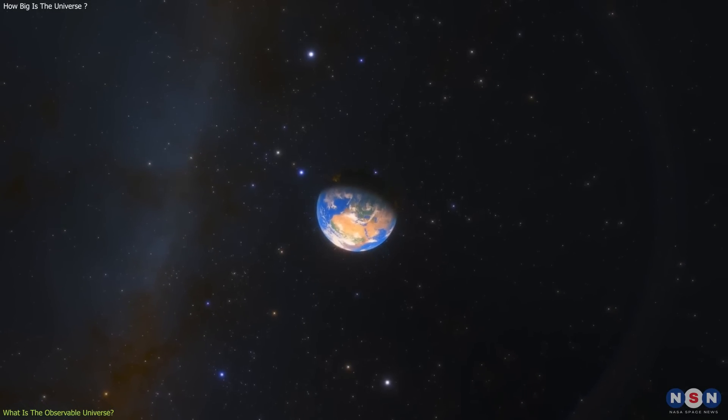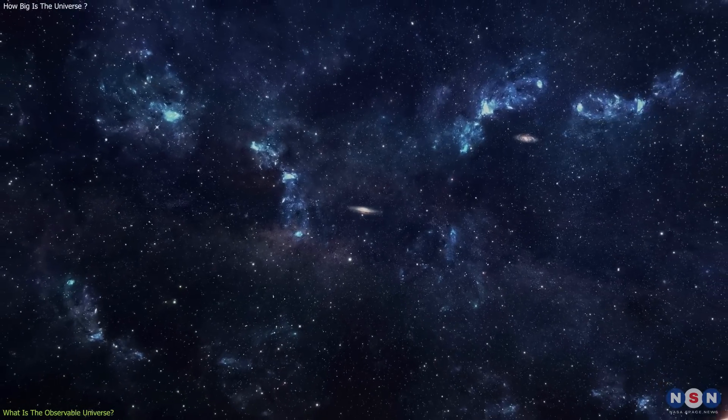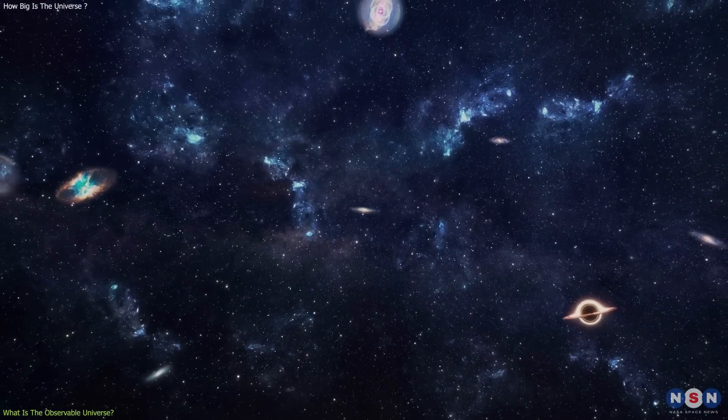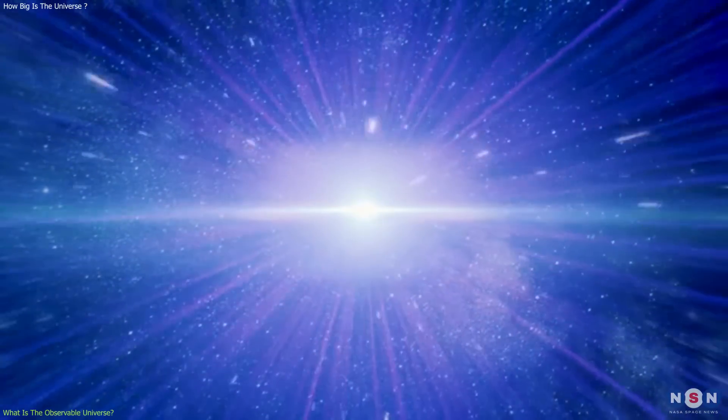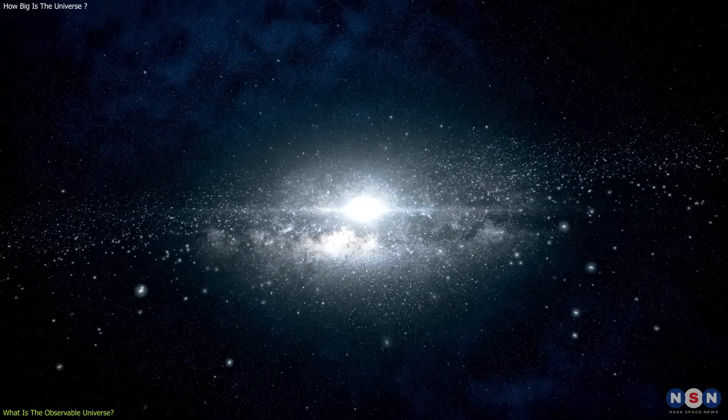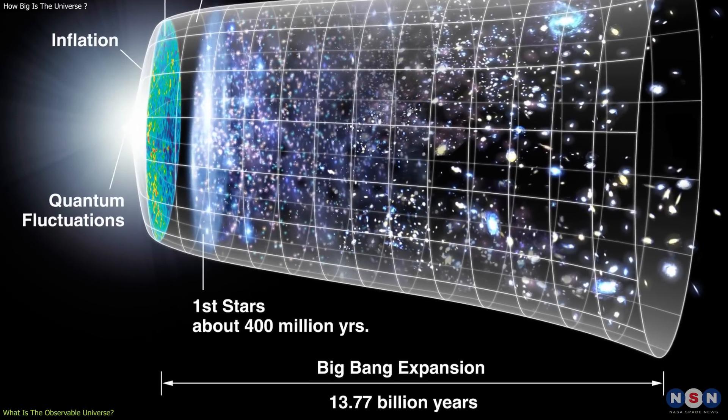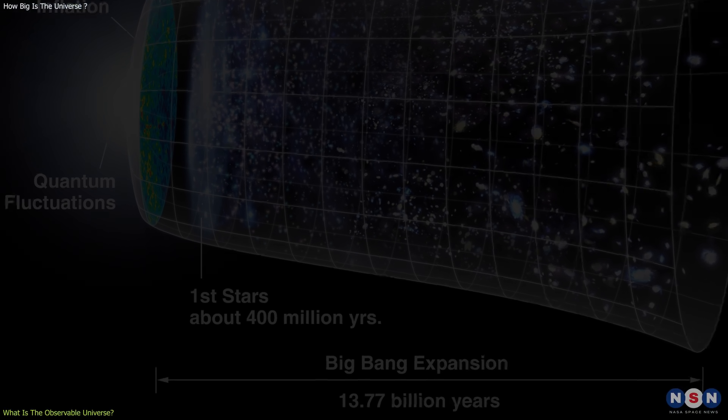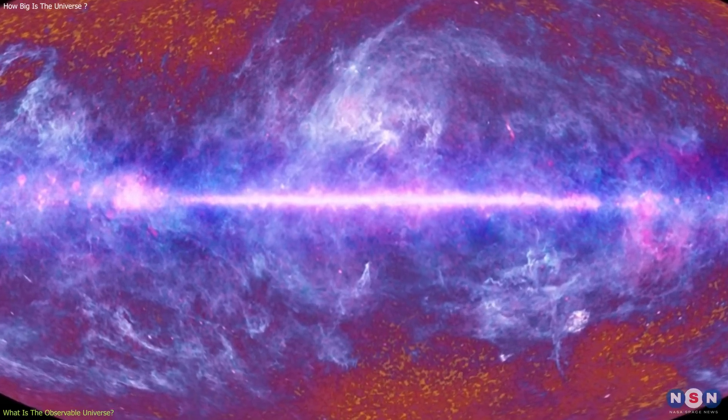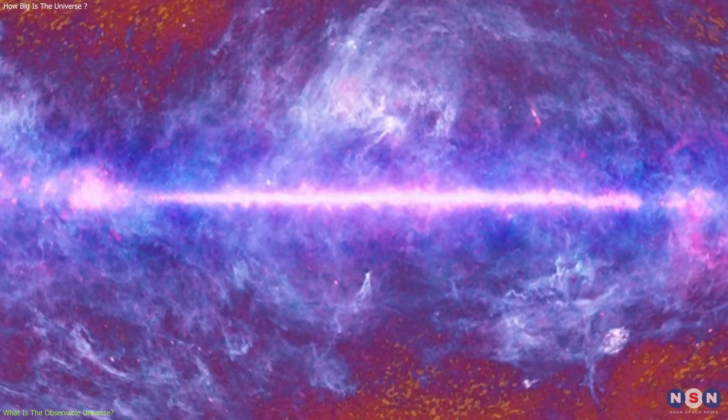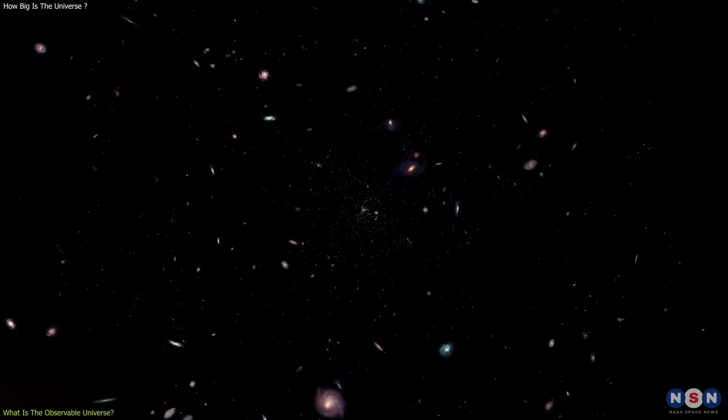Now, imagine that we could look at the farthest object that we can see in the universe. How far would it be? And how old would the light be? Well, the answer is that it would be about 46 billion light years away, and the light would be about 13.8 billion years old. That's because the universe is about 13.8 billion years old, and that's the oldest light that we can see. This light is called the Cosmic Microwave Background Radiation, or CMB for short, and it is the remnant of the Big Bang, the event that created the universe.